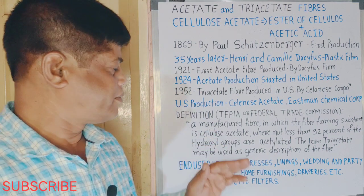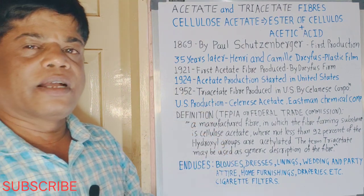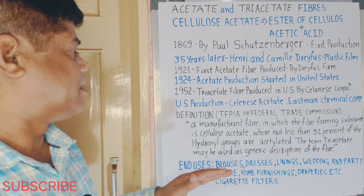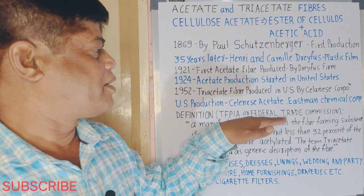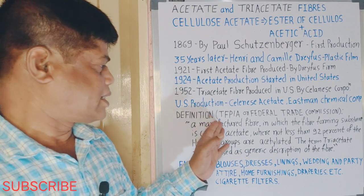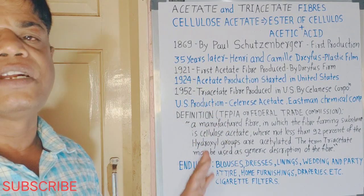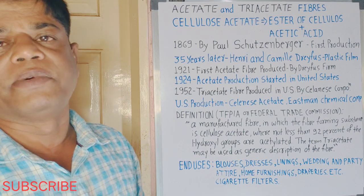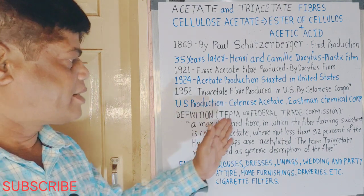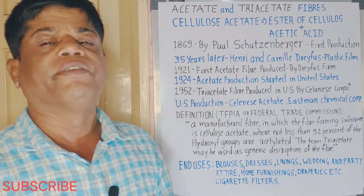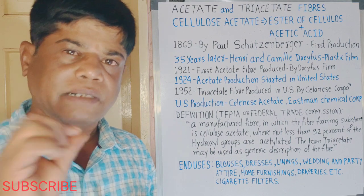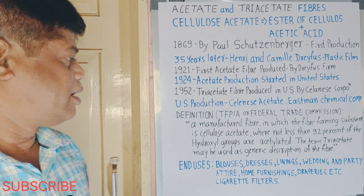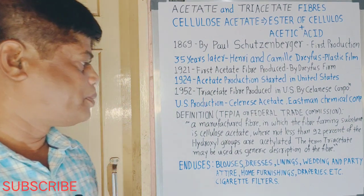After commercialization, the Federal Trade Commission and the Textile Fiber Products Identification Act standardized the definition of acetate fibers. Acetate is a manufactured fiber in which the fiber-forming substance is cellulose, where not less than 92 percent of the hydroxyl groups are acetylated.